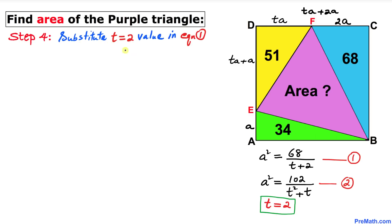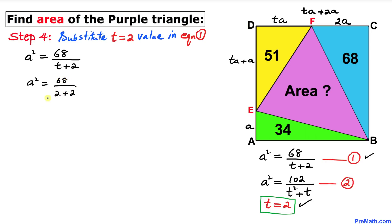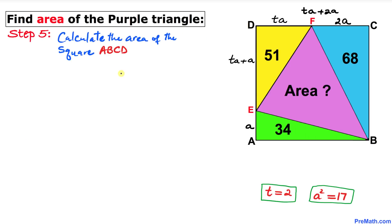Substituting t equals 2 into Equation 1: a squared equals 68 divided by (2 + 2), so a squared equals 68 divided by 4, which gives a squared equals 17.